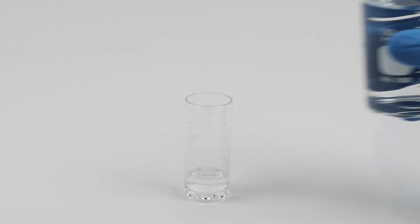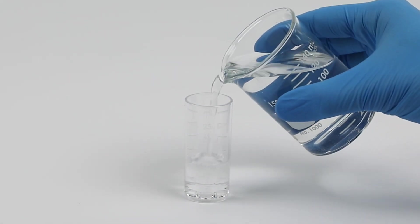Once the sample is added to the sample cup, dilute the sample with distilled water to the specified volume directed in the instructions. Depending on the test being conducted, add accessory solutions if needed.